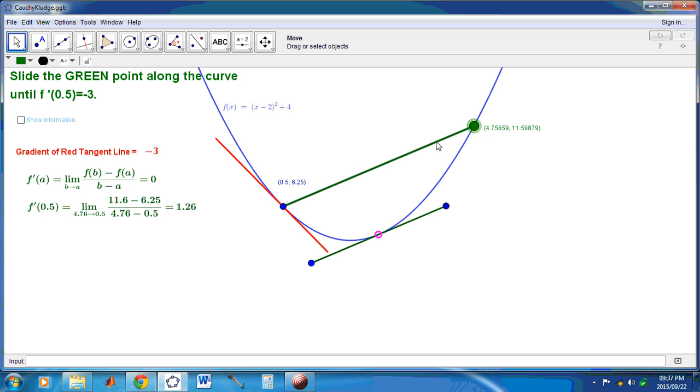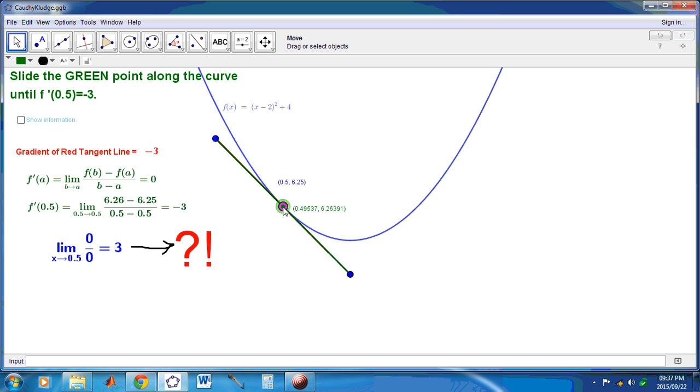the green line here is a secant line. To find the slope of this red tangent line, which we already know is minus 3 since the equation is given up here, we simply keep moving that secant line until it really becomes parallel with the tangent line.